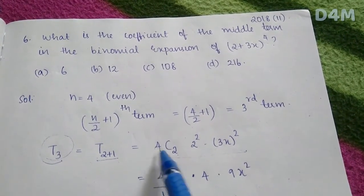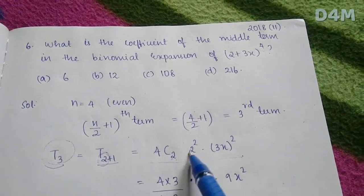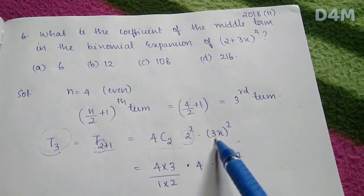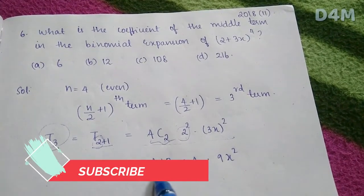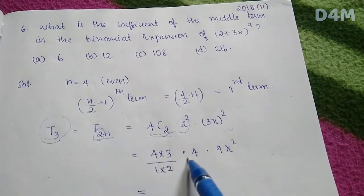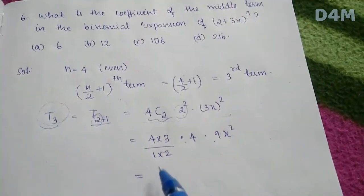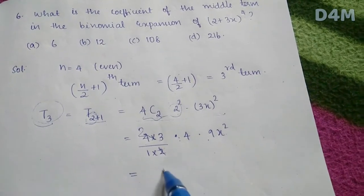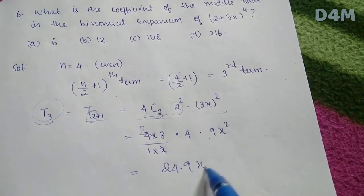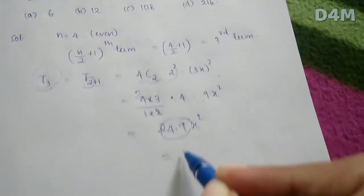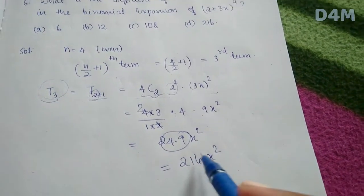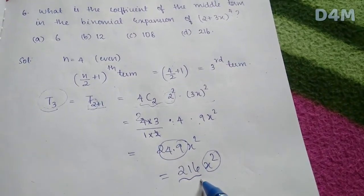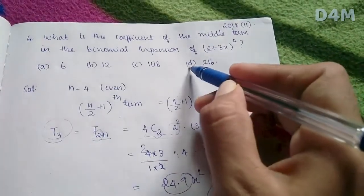Substituting: 4C2 · 4 · 9x². 4C2 = (4×3)/(1×2) = 6. So 6 × 4 × 9x² = 216x². The coefficient is 216. Option D is the correct answer.